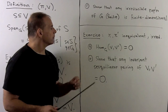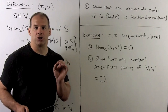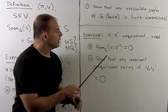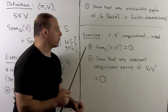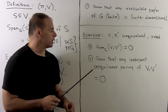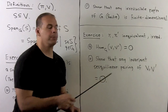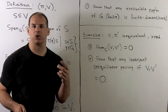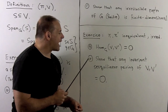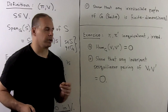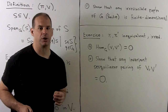Exercise, applying Schur's Lemma: if I have pi and pi prime as inequivalent irreducible representations, show that the space of intertwining operators is equal to zero — that's straight from Schur's Lemma. Then apply that to show that any invariant sesquilinear pairing of V and V prime must be zero.